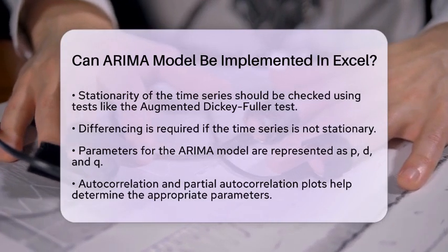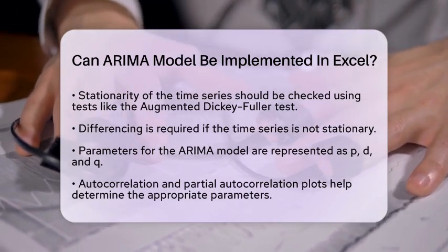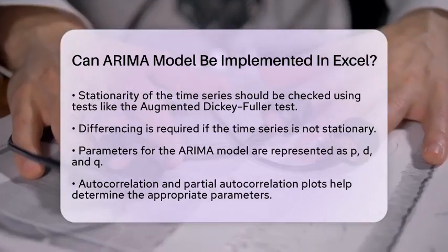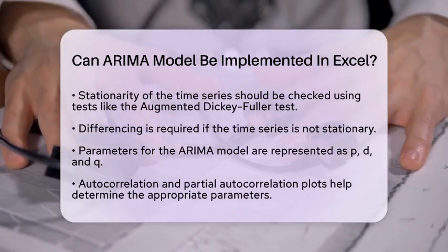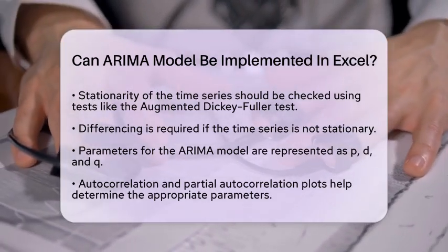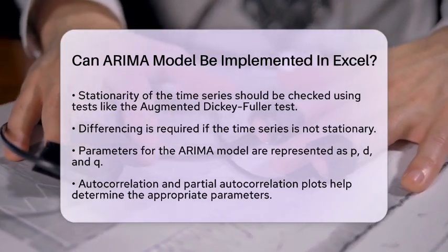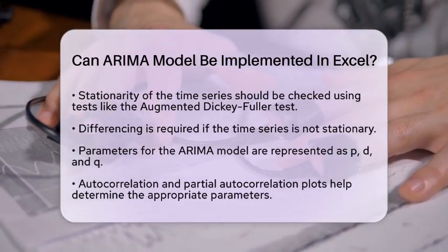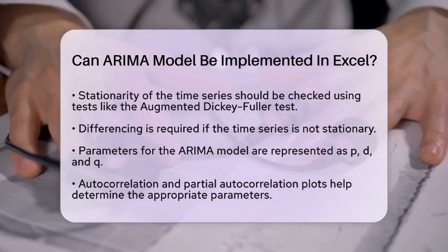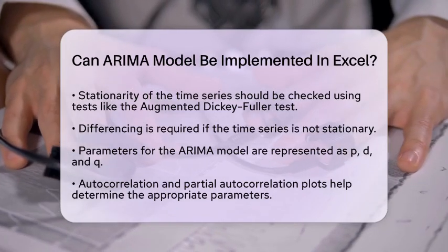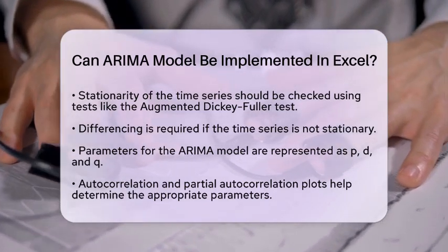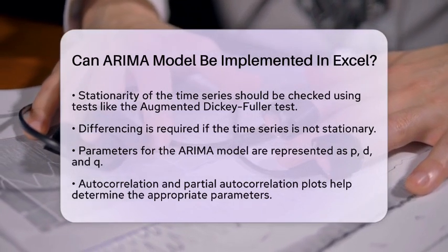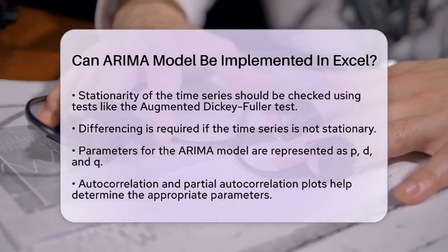After confirming stationarity, you will select the appropriate parameters for your ARIMA model. These parameters are represented as p, d, and q. You can determine these values by analyzing autocorrelation and partial autocorrelation plots. Once you have your parameters, you can fit the ARIMA model using the chosen values, and then use the fitted model to forecast future values.